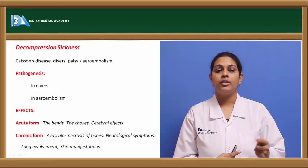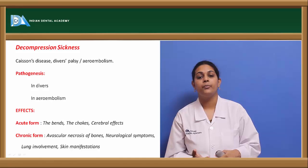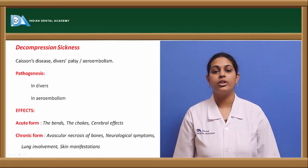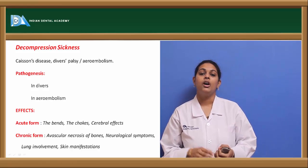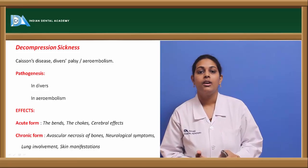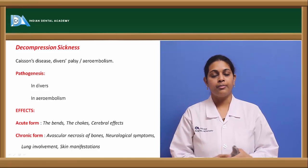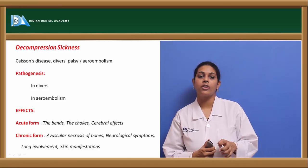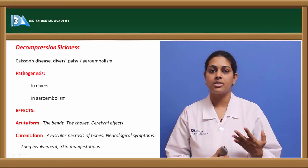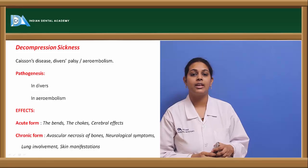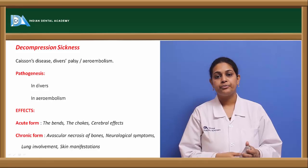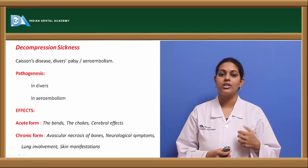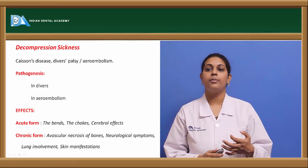Effects of decompression sickness include acute and chronic forms. In the acute form, the patient experiences 'bends' — abnormal joint pain causing the patient to suddenly jump up — and 'chokes,' involving abnormal breathing. Cerebral effects include coma or dysphagia. In chronic forms, avascular necrosis of bone, neurological symptoms such as paresthesia and paraplegia, and lung involvement manifesting as cough, hemoptysis, and throat pain can be seen. Skin manifestations include allergic reactions and erythematous areas.